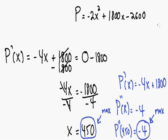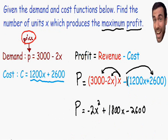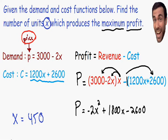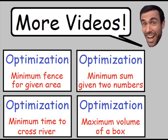Now we are ready to answer our question. It says find the number of units x which produces the maximum profit. We know x equals 450 is indeed a maximum, so 450 units is our answer. This is the number of units that, if produced, will produce the maximum profit. I hope this video gave you a better idea of how to perform optimization problems. There are many other examples which are much different, so I made four other optimization videos as well.